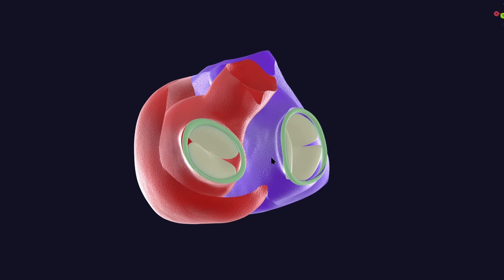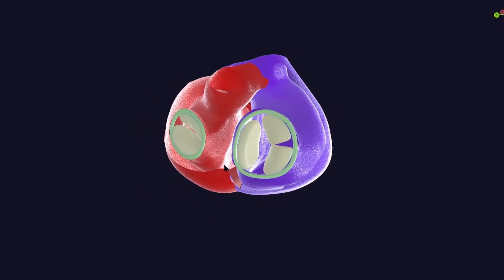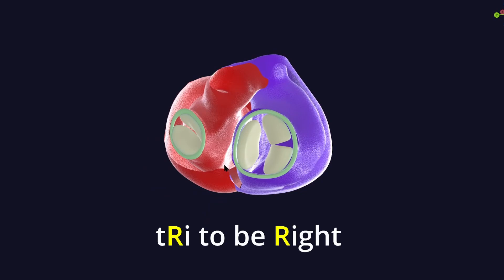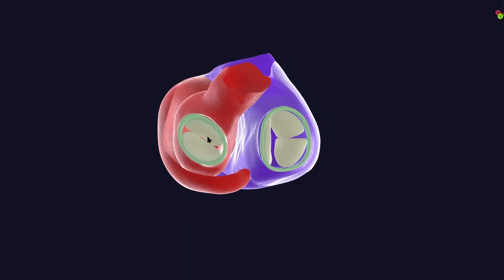An intriguing mind might question why the right side has a 3-cusped valve and the left side has a 2-cusped valve. An easy mnemonic to remember this: 'Try to be right' — right side has tricuspid, and the left side has a bicuspid valve, also called the mitral valve.